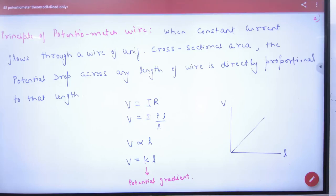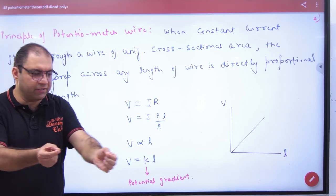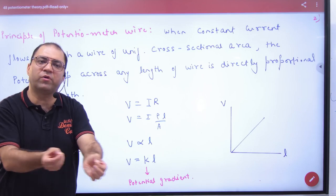Principle of Potentiometer: When constant current flows through a wire of uniform cross-sectional area, the potential drop across any length of the wire is directly proportional to the length of the wire. V is proportional to L. So if the balancing length is bigger, the potential difference is correspondingly bigger.